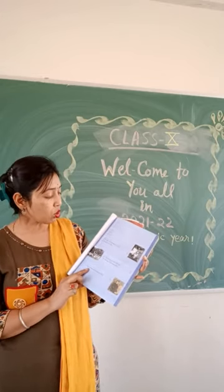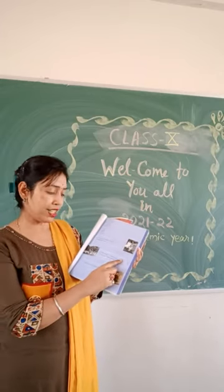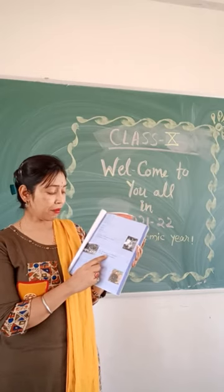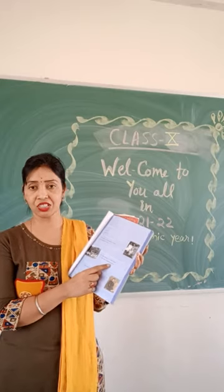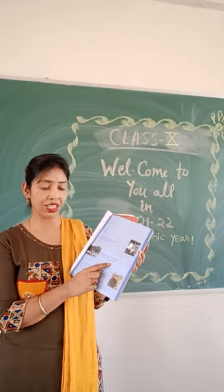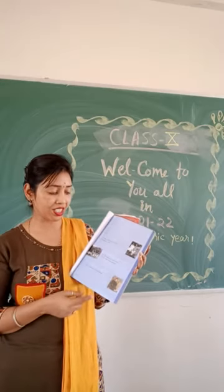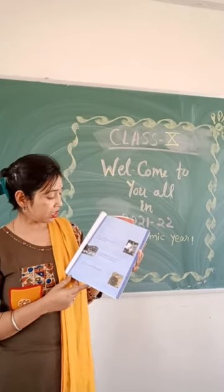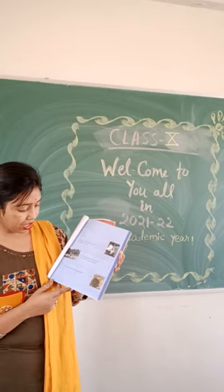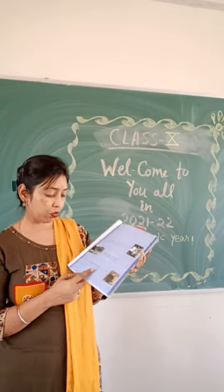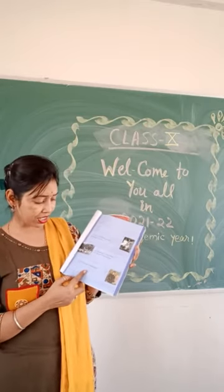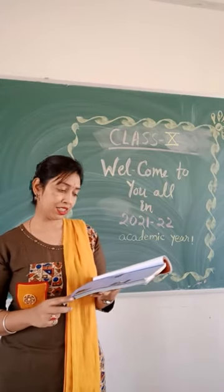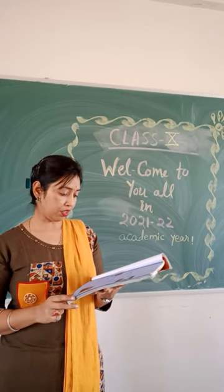The second section of History is 'Livelihoods, Economics and Societies.' In this section we will study two chapters: Chapter 3 is 'The Making of a Global World,' and Chapter 4 is 'The Age of Industrialization.' The third section is 'Everyday Life, Culture and Politics,' and its chapter is 'Print Culture and the Modern World.' So in this History book we will study three sections and a total of five chapters.